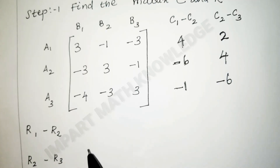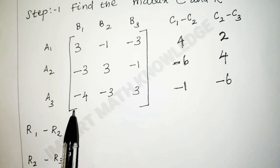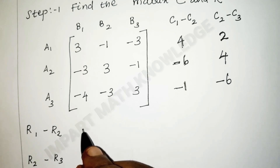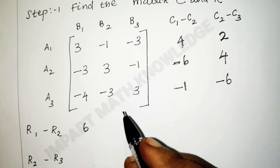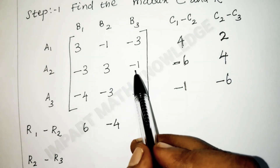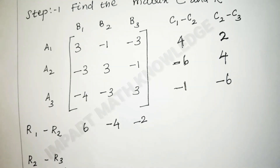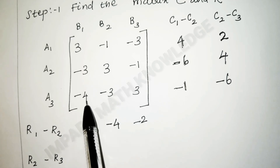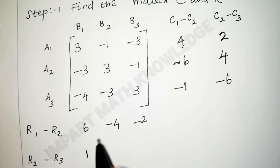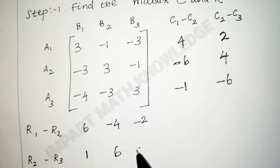For the row matrix, we take the difference between row 1 and row 2, then row 2 and row 3. R1 minus R2: 3 minus (−3) = 6; −1 minus 3 = −4; −3 minus (−1) = −2. R2 minus R3: −1 minus (−3) = −4; −3 minus (−3) = 6; wait — −1 minus 3 = −4.